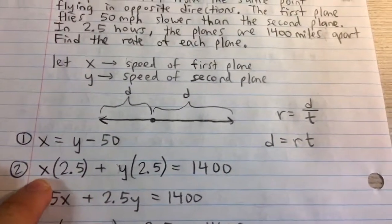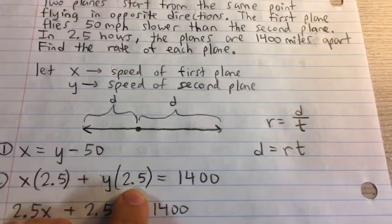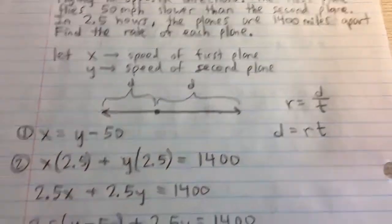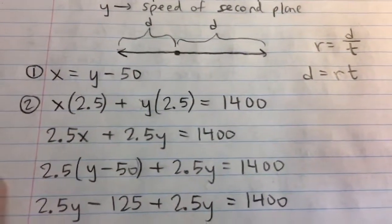We take the speed of the first plane times the time 2.5 plus the speed of the second plane times the time 2.5. Again, that's 1,400. So I wrote it with the coefficients first because that's what we typically do in math.